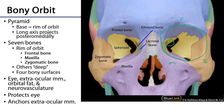The four sides include the roof of the orbit, the lateral wall of the orbit, the inferior or floor of the orbit, and then the medial wall. Here is the medial wall, there is the roof, there is the lateral wall, and there is the floor. It's probably best to take a moment and appreciate the relative relationships of the orbit to other regions of the skull.